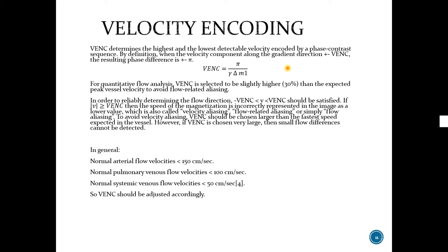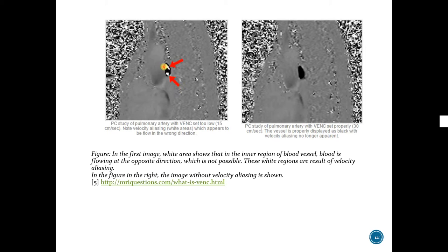In general, vessel velocities are given like this, and so we should select VENC accordingly. Here you can see an artifact, velocity aliasing artifact, resulted from small VENC. In this case, VENC was selected as 15 cm per second. However, if VENC equals 30 cm per second, there is no velocity aliasing artifact.